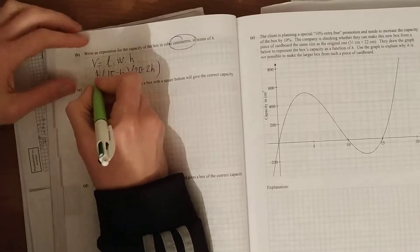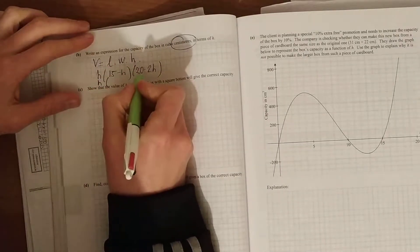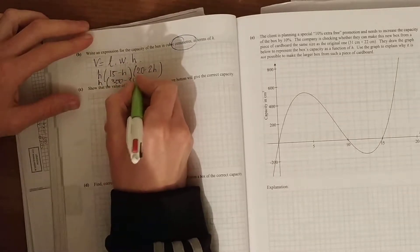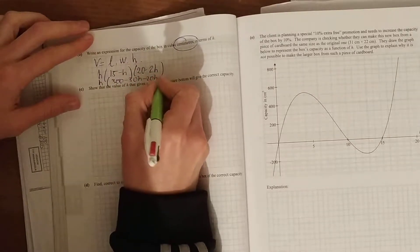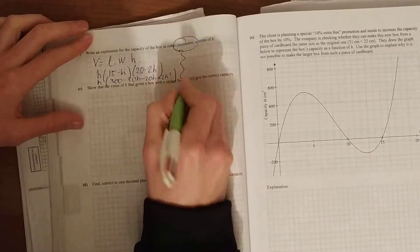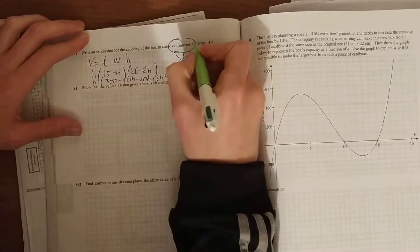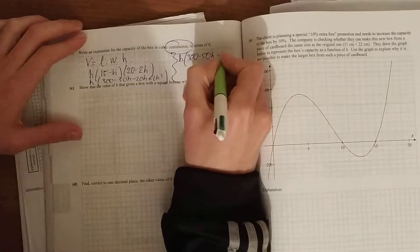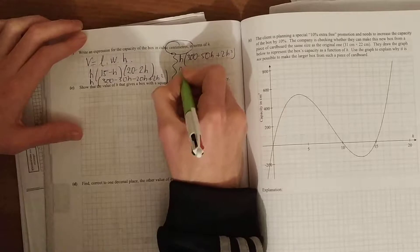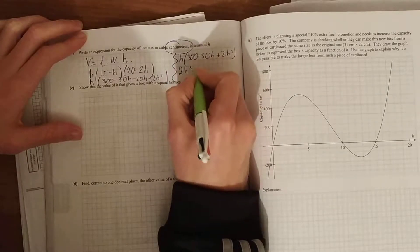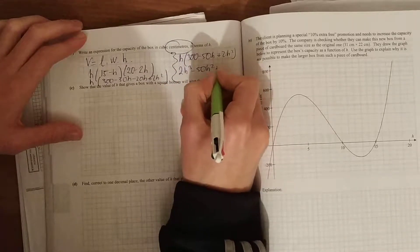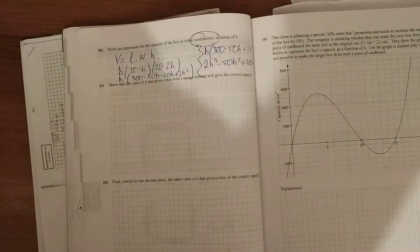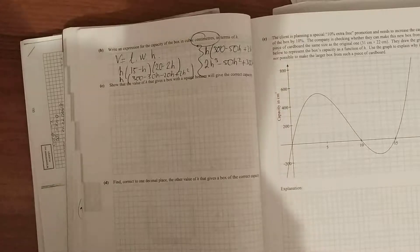And if you tidy that up, 15 times 20 is 300, minus 30h minus 20h plus 2h squared. And so that's h times 300 minus 50h plus 2h squared. And you multiply out to get 2h cubed minus 50h squared plus 300h. So there's an expression for our volume.